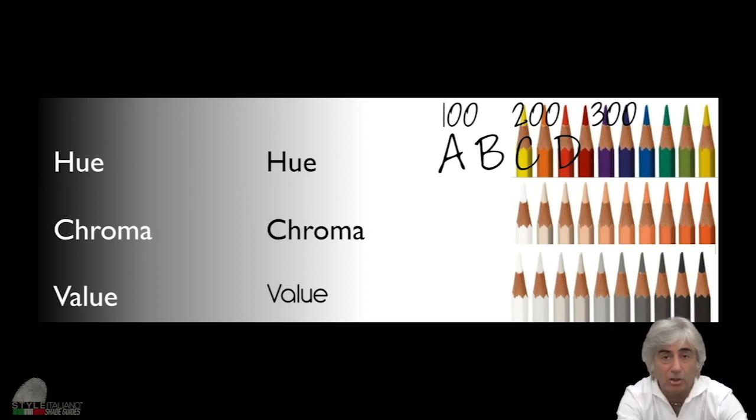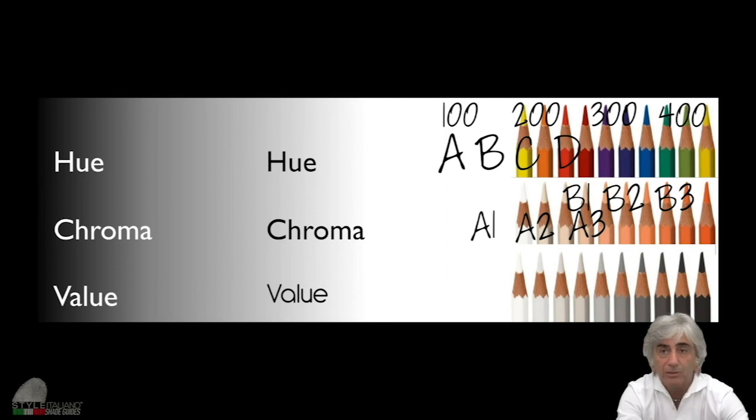What about the chroma? In dentistry, the chroma is a number. It means A1, A2, A3, or B1, B2, B3. So the quantity of the hue that you have inside is indicated by a number. Bigger is the number, higher is the chroma. That's the relations.